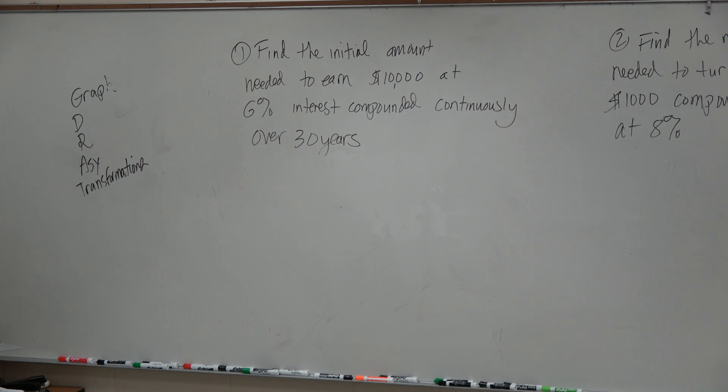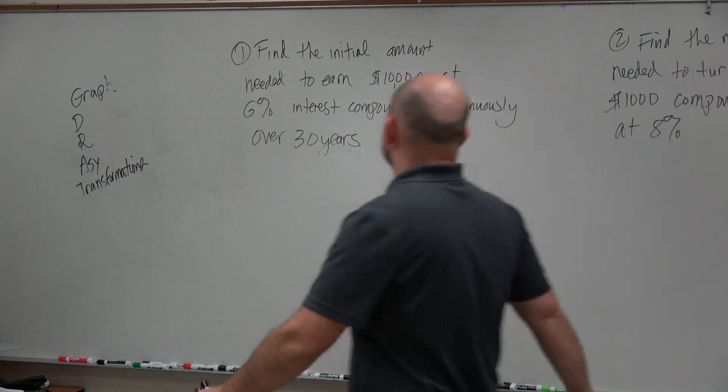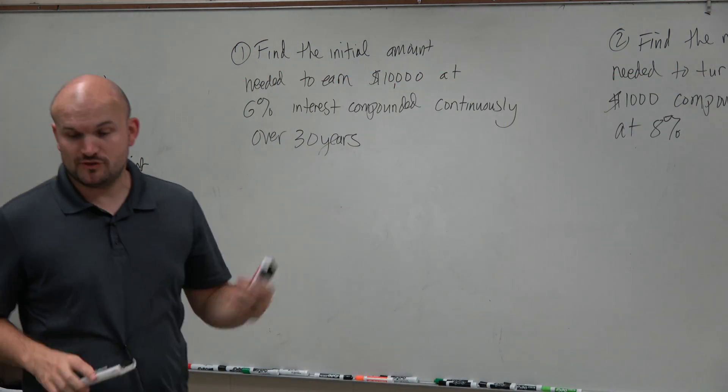So what I'd like to do is show you how to find the initial amount needed to earn $10,000 at 6% interest compounded continuously over 30 years.